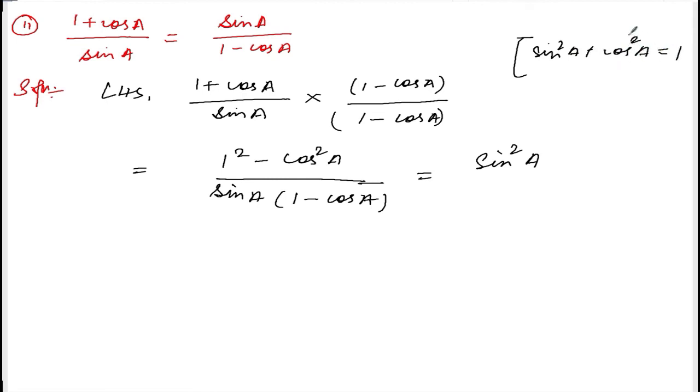equal to sin square A divided by sin A into 1 minus cos A. Sin A and sin A will cancel—there are 2, right? Sin square means there are 2 sin A, so one will be cancelled. What's left is sin A divided by 1 minus cos A,